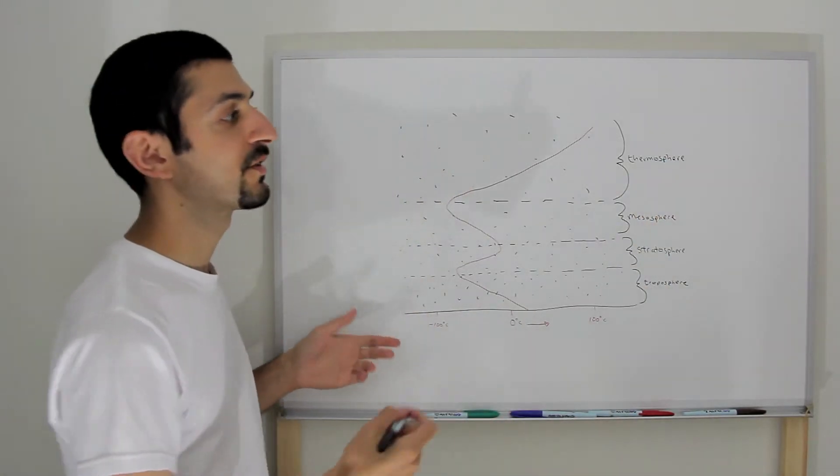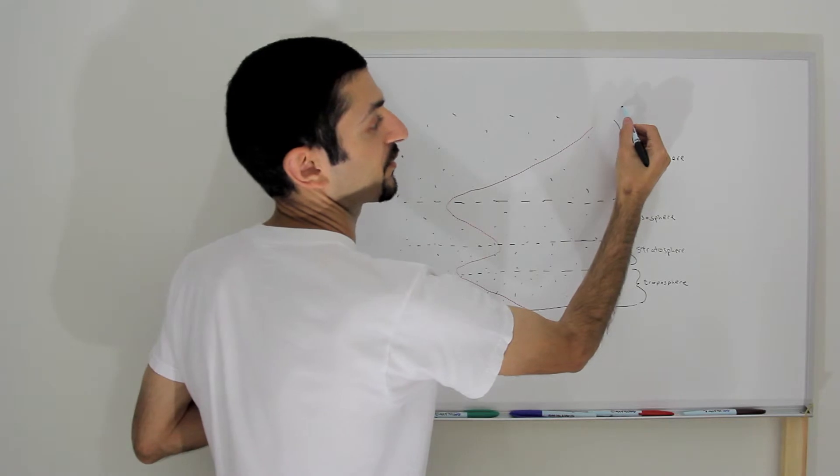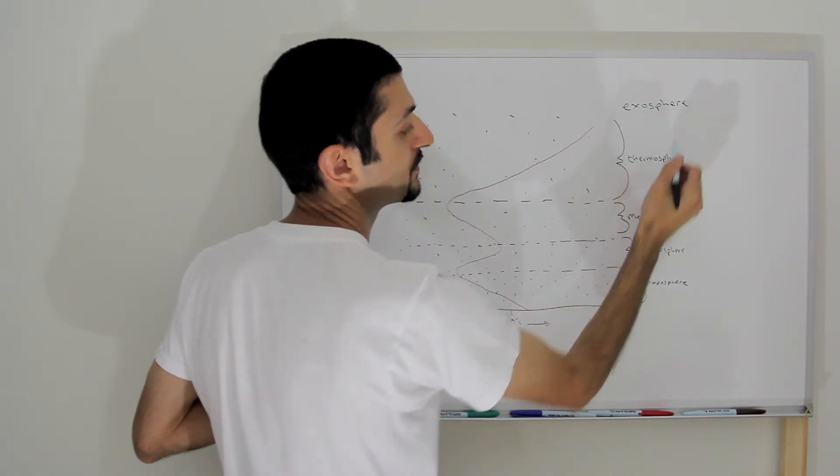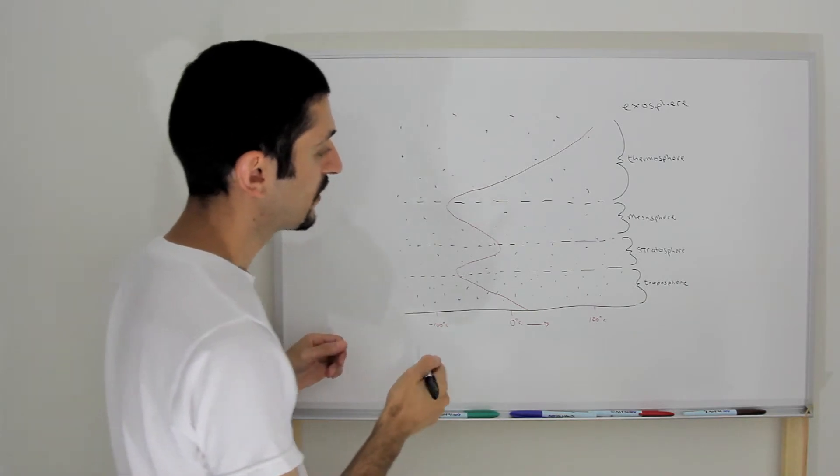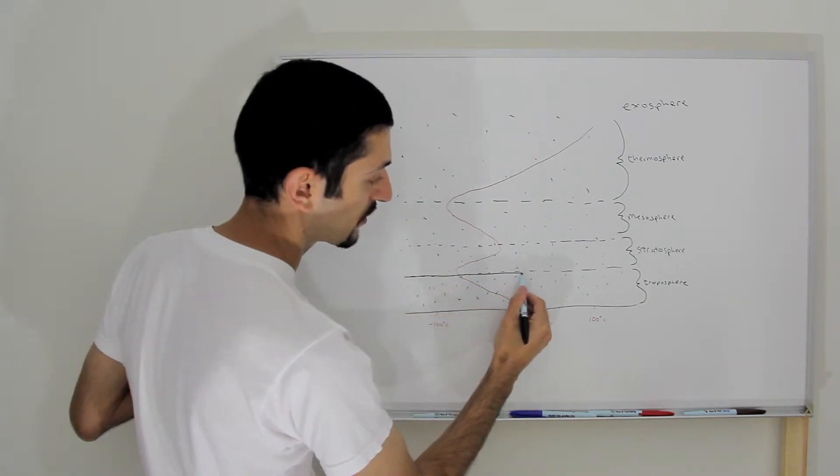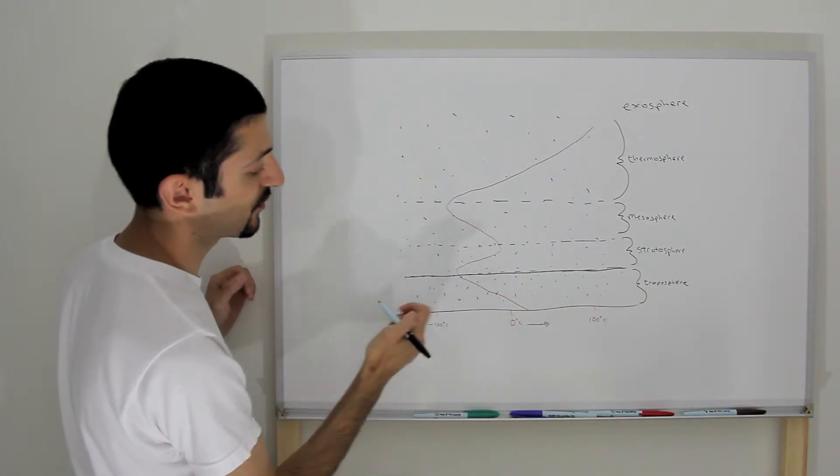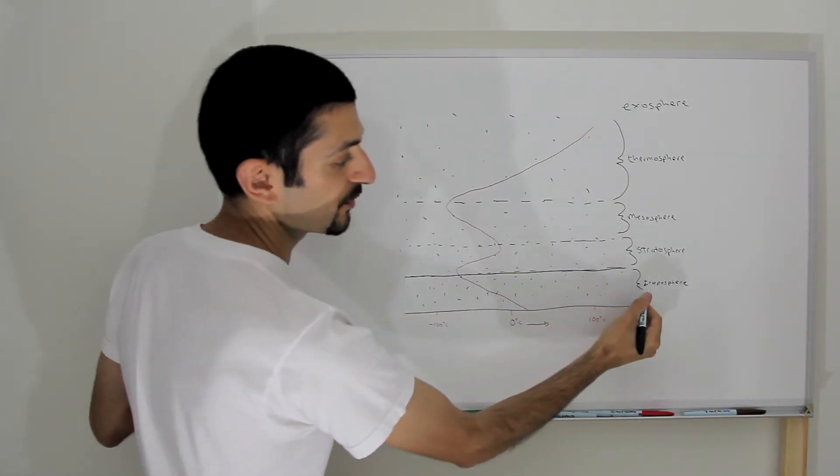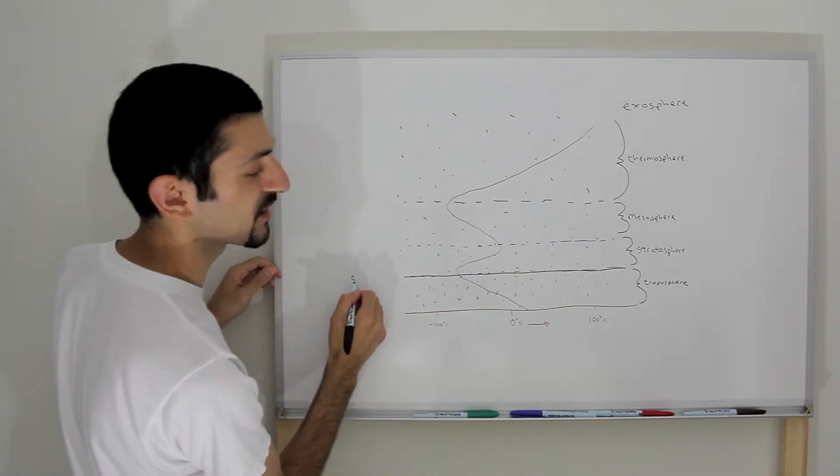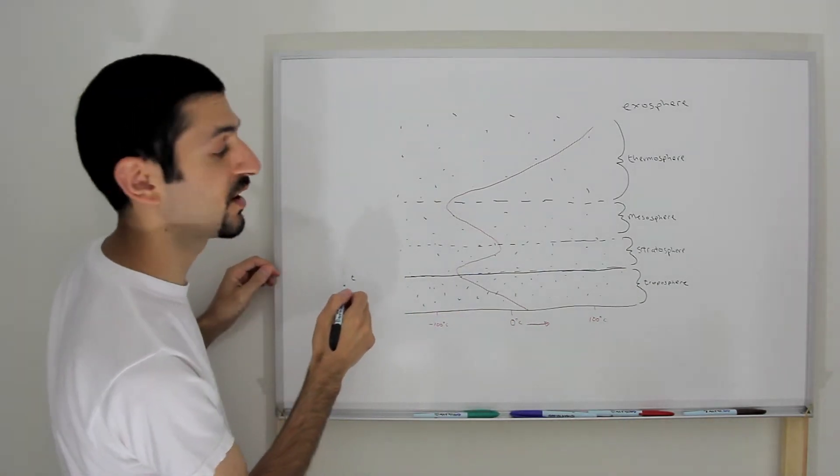Now beyond the thermosphere is referred to as the exosphere. Now, this line here, where the temperature starts to reverse between the troposphere and the stratosphere is referred to as the tropopause.